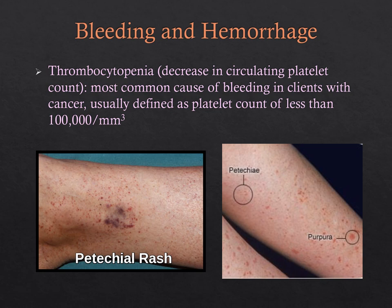Thrombocytopenia — a decrease in circulating platelet count — is the most common cause of bleeding in cancer patients. You may see a petechial rash, where tiny blood vessels start to rupture and appear on the skin. Monitor for bleeding and hemorrhage whenever you see petechiae, not just in cancer patients.